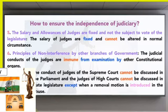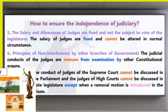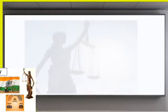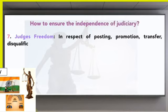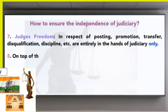Next is the principle of non-interference by the other branches of government. The judicial conduct of the judges is immune from examination by other constitutional organs. The conduct of judges of the Supreme Court cannot be discussed in Parliament, and the conduct of judges of the High Court cannot be discussed in the State Legislature, except when a removal motion is introduced in the House.